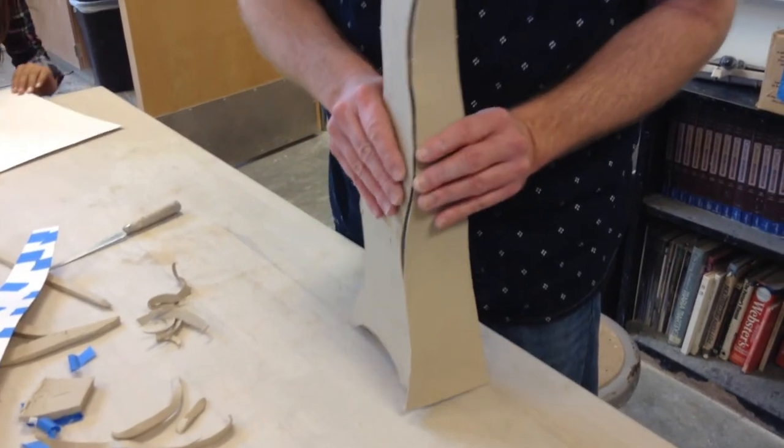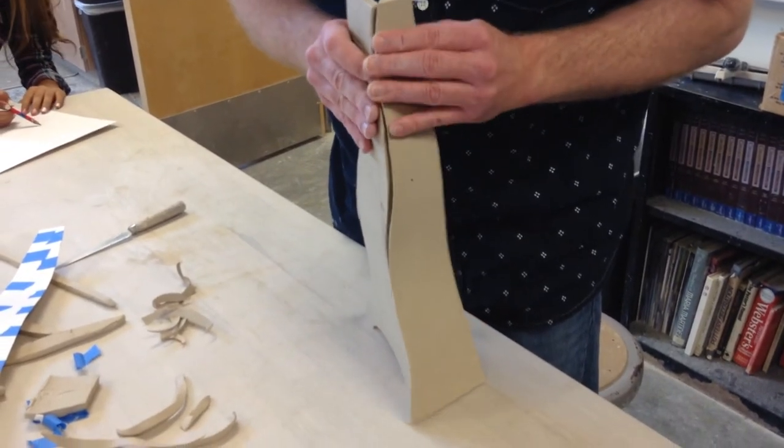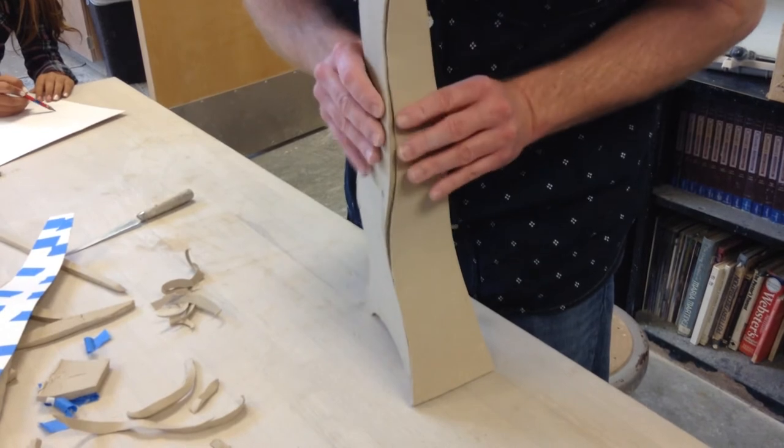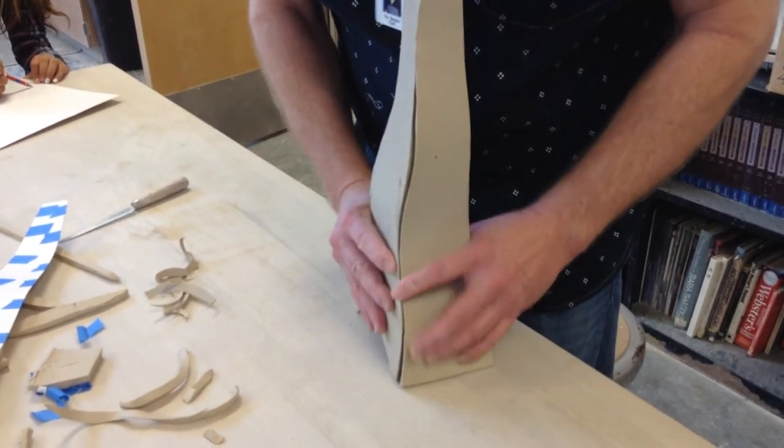So again, you can see we've got two angles that are going to come together. I do need to score and slip all of this to put it together.